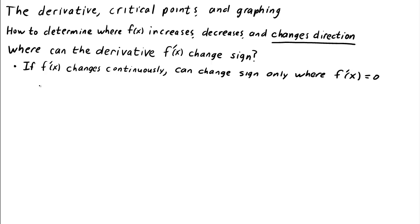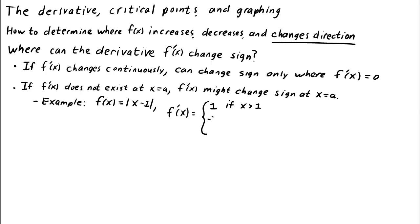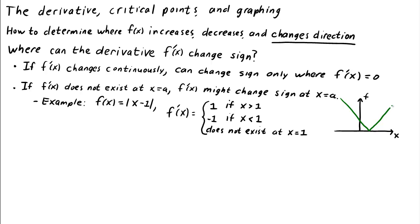A zero derivative isn't the only way the derivative could change sign. If the derivative of f does not exist at a point x equals a, i.e., if the function f is not differentiable at x equals a, then the derivative might also change sign at x equals a. For example, for the function f of x equals the absolute value of x minus 1, the derivative f prime of x equals 1 for x greater than 1, and f prime of x equals negative 1 for x less than 1. At the point x equals 1, where the derivative changes sign, the derivative does not exist. The function f of x, whose graph looks like this, is not differentiable at x equals 1.